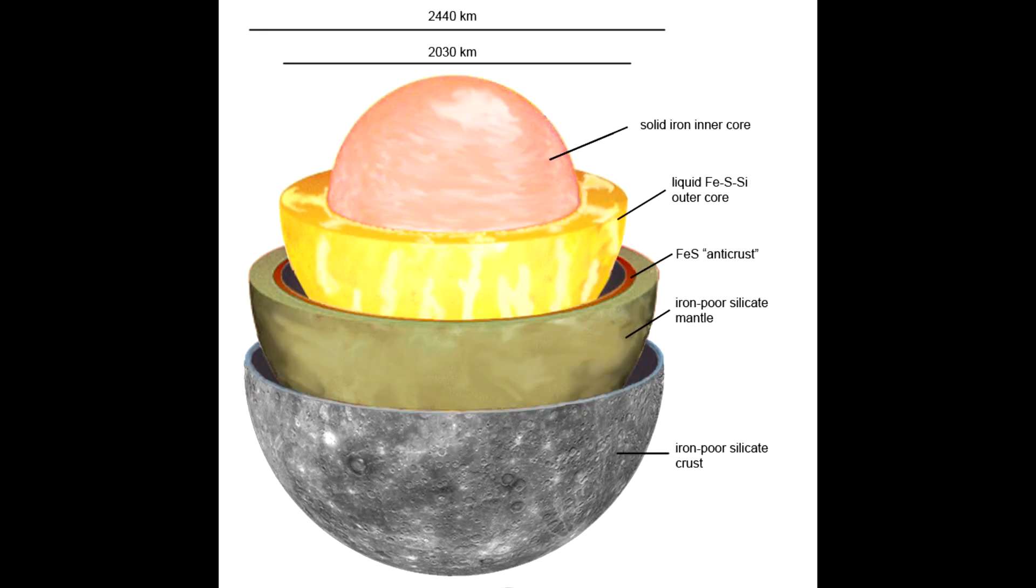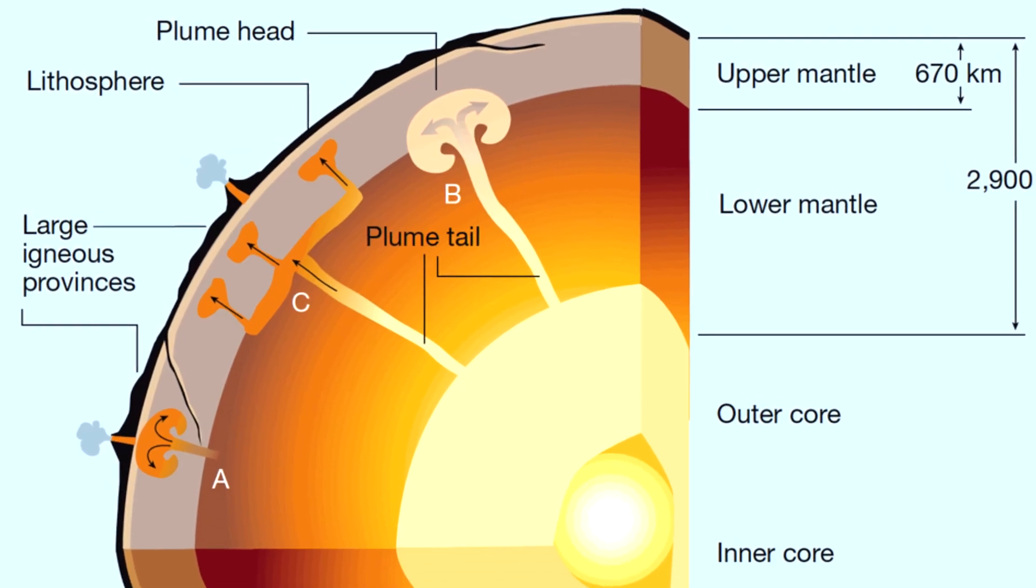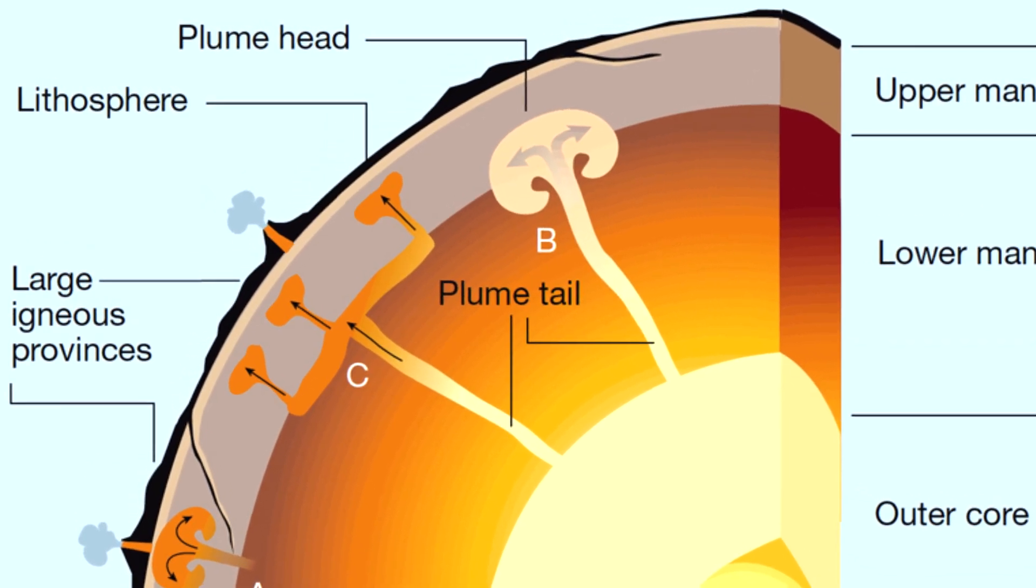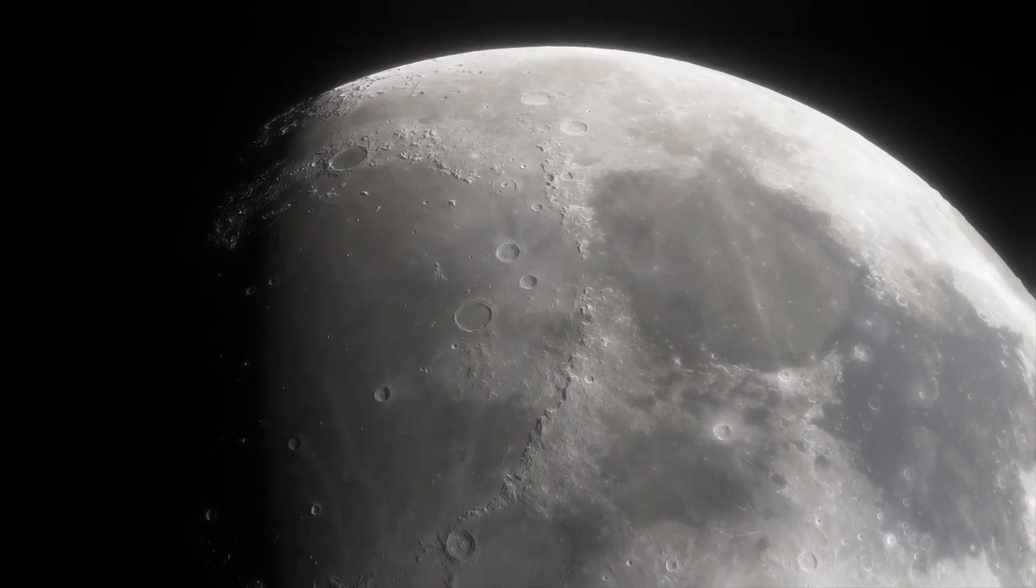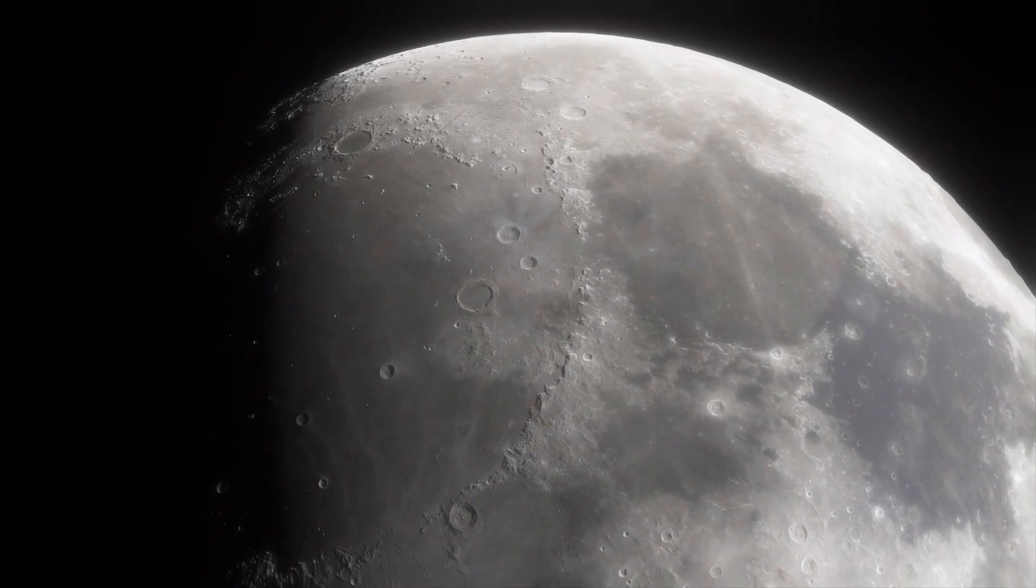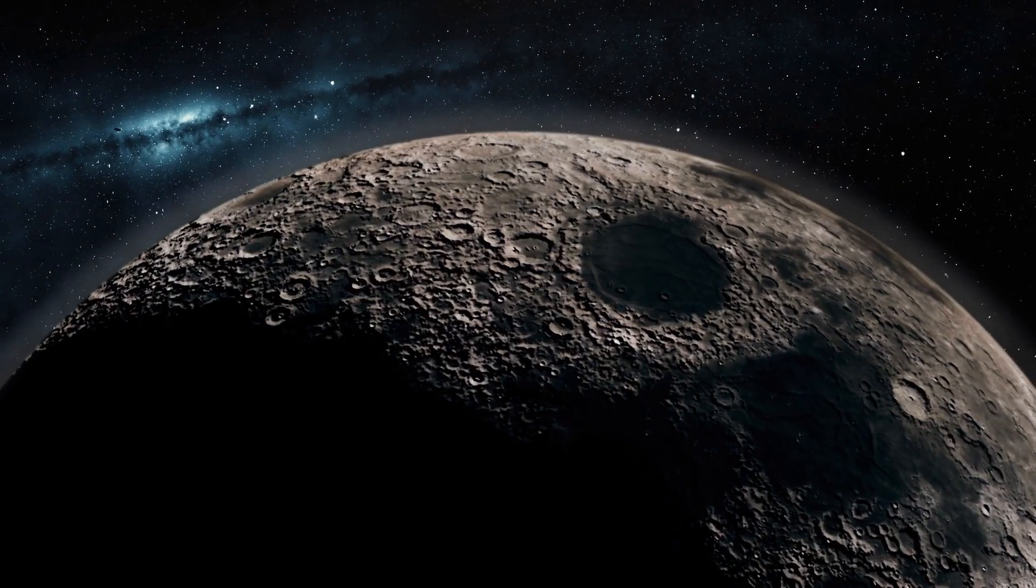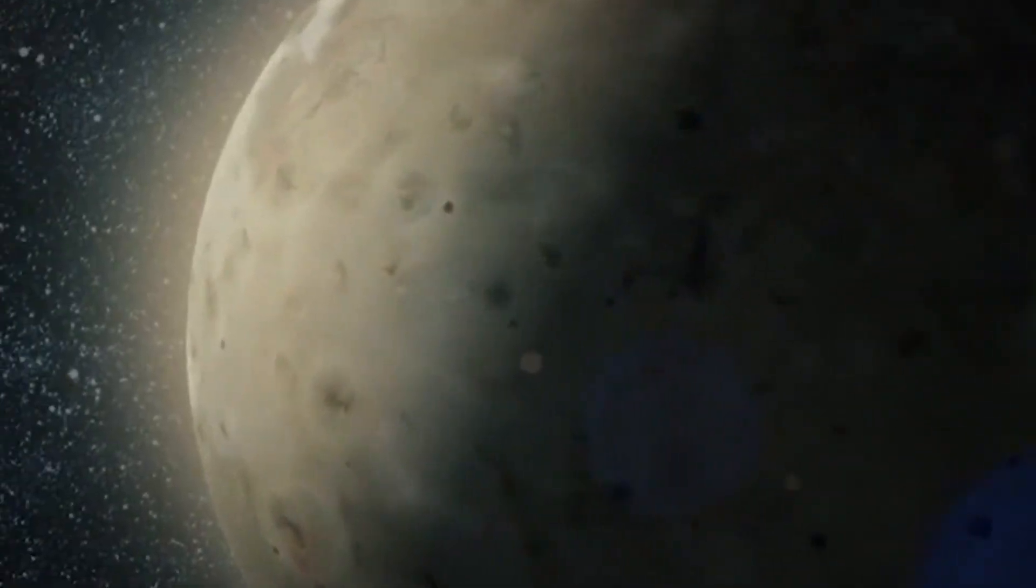Furthermore, the mantle beneath Mercury's surface is thinner than previously thought. While Earth's mantle is about 1,800 miles or 2,900 kilometers thick, new studies indicate that Mercury's mantle may only be around 260 miles or 420 kilometers thick. This reduced thickness influences the movement of Mercury's rocks and the distribution of heat within the planet.